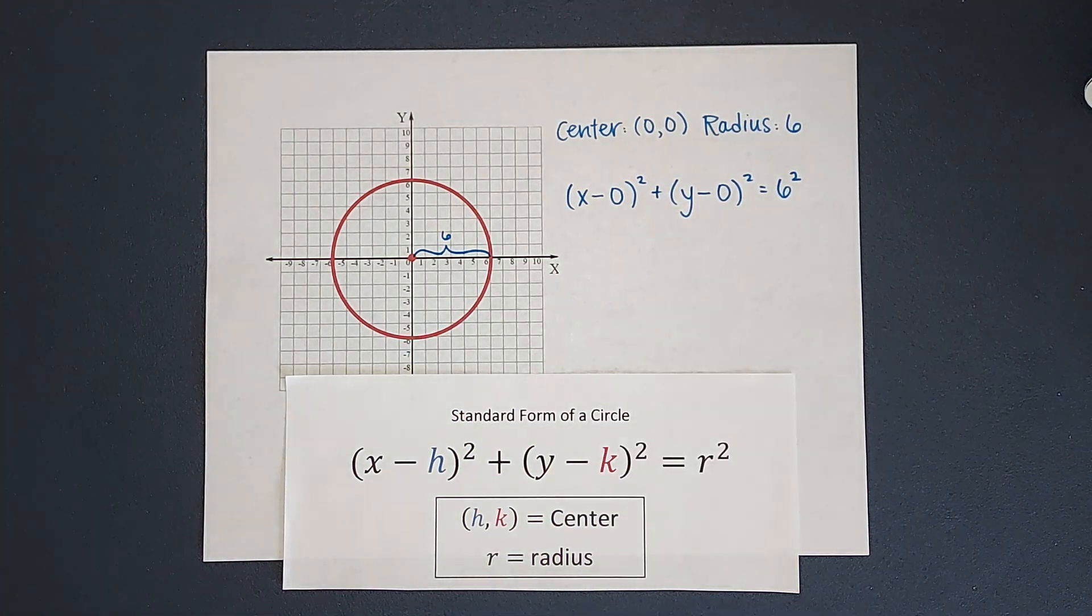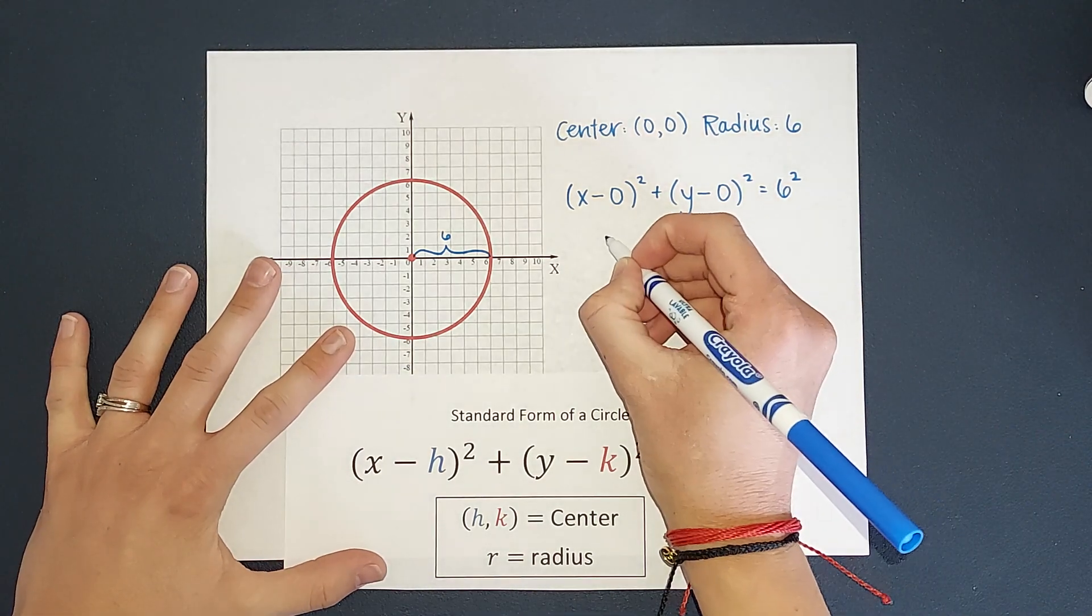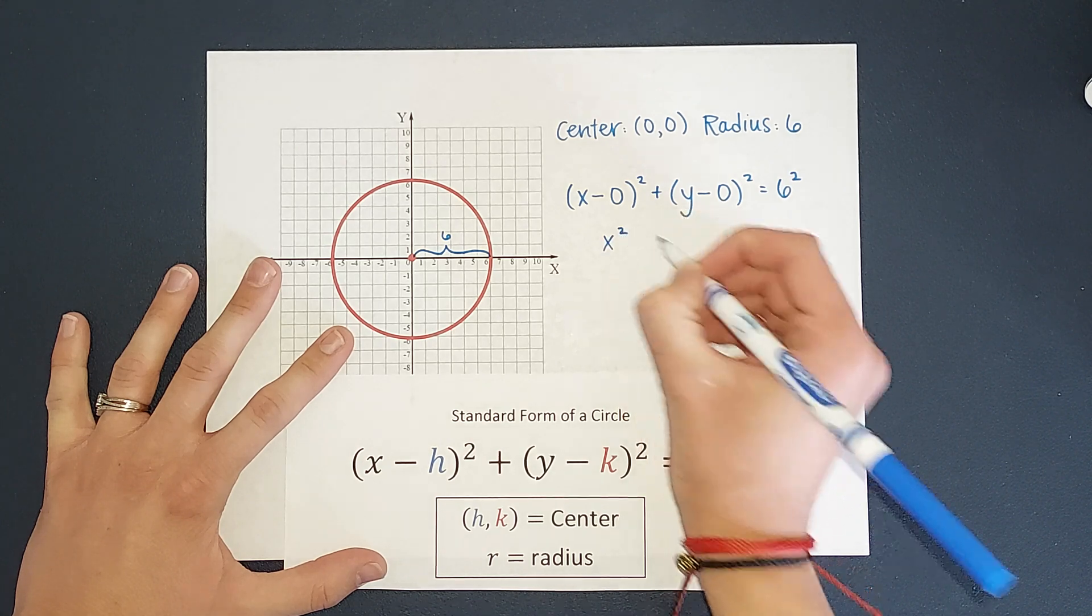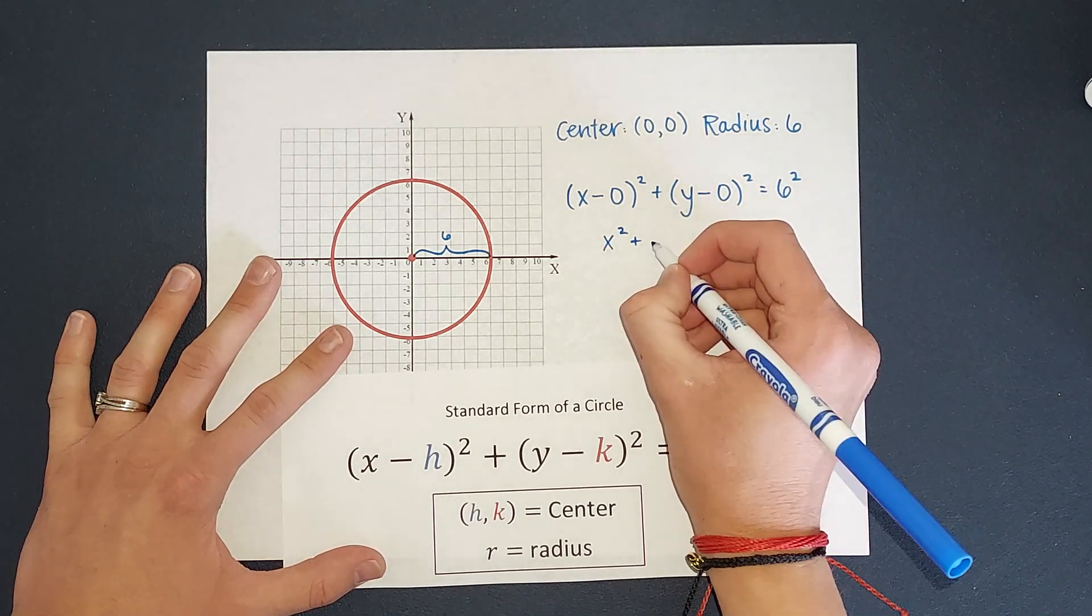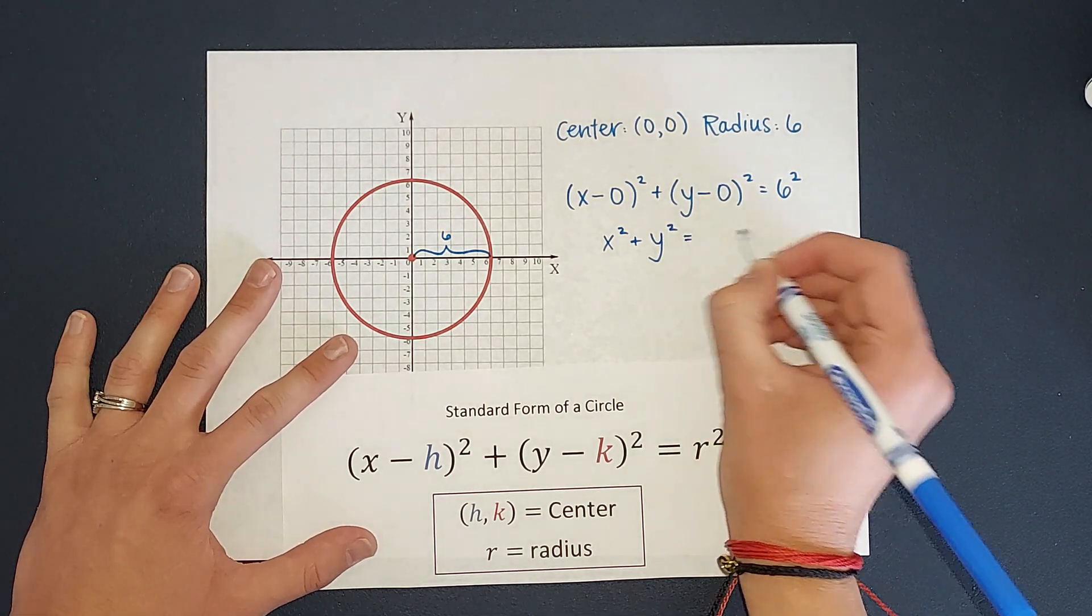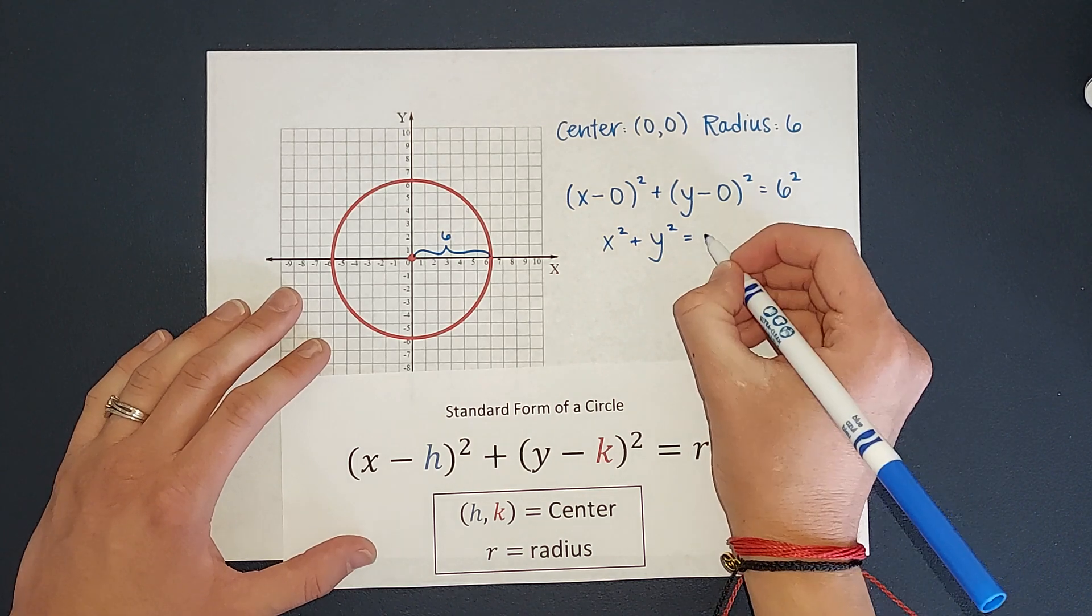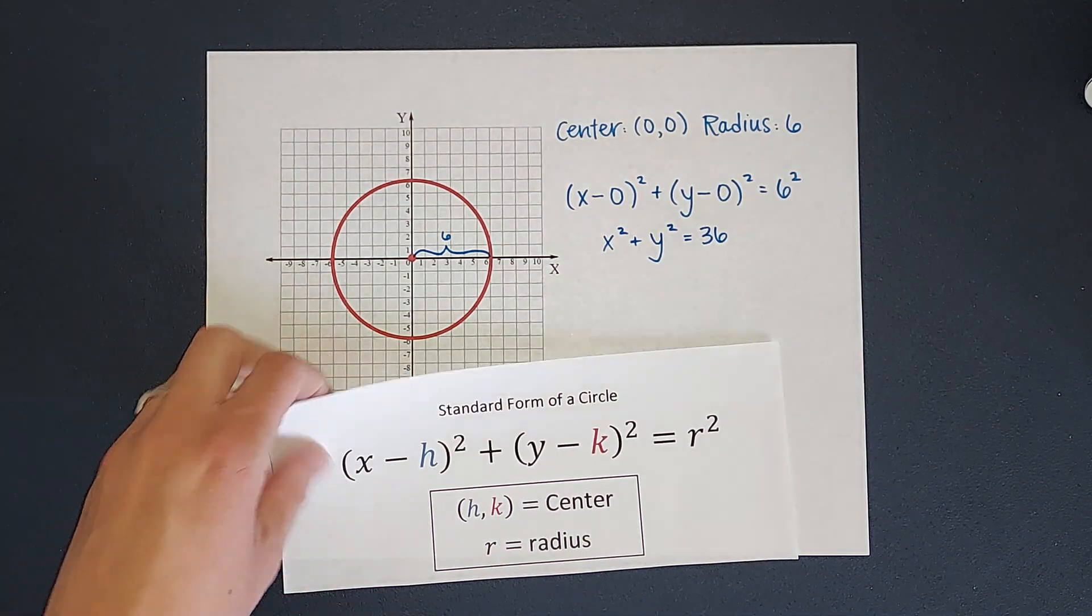Now let's simplify this down. So x minus zero is just x, right? So I can just write this as x squared plus, again, y minus zero is just y, y squared equals six squared, six times six is 36. And that is my equation.